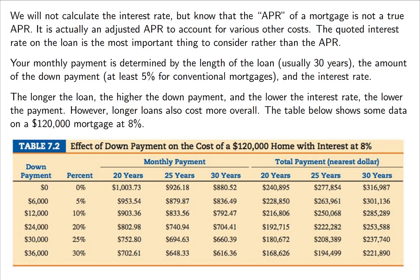Your monthly payment is determined by a few things: the length of your loan, your down payment, and the interest rate. If you have a longer loan or a higher down payment or a lower interest rate, you won't have to pay as much per month. However, the longer you pay for a loan, the more money you're going to pay in the long run.